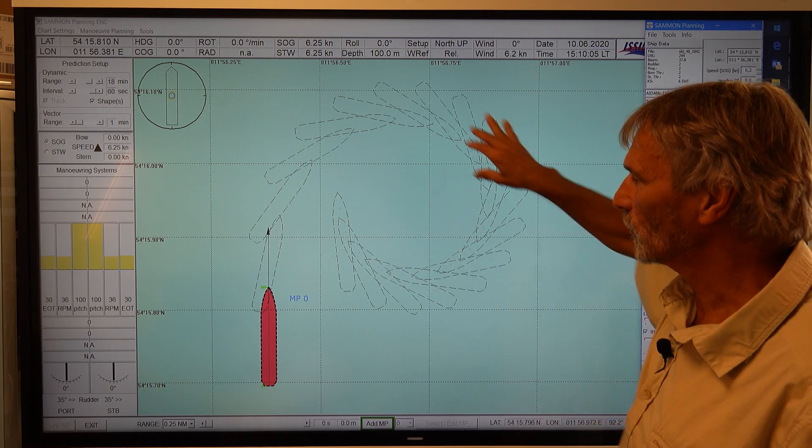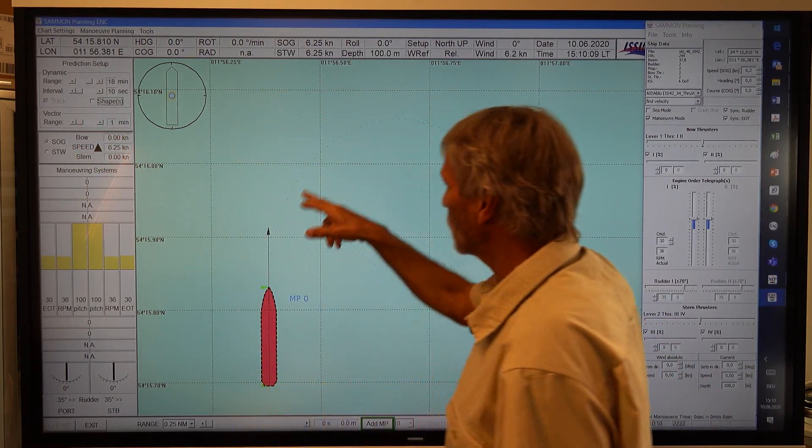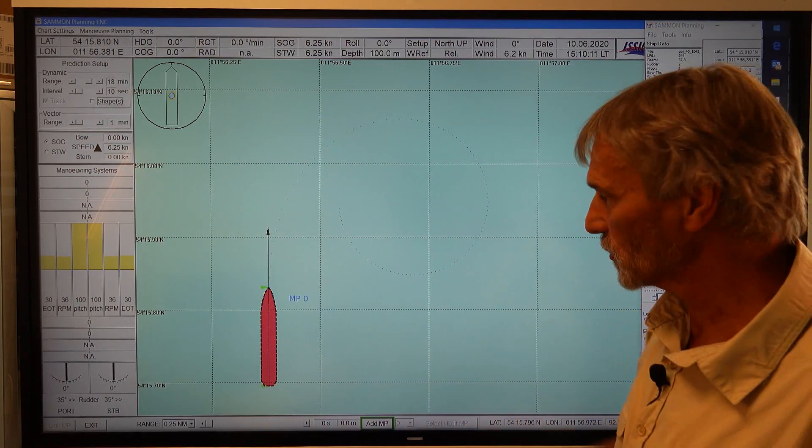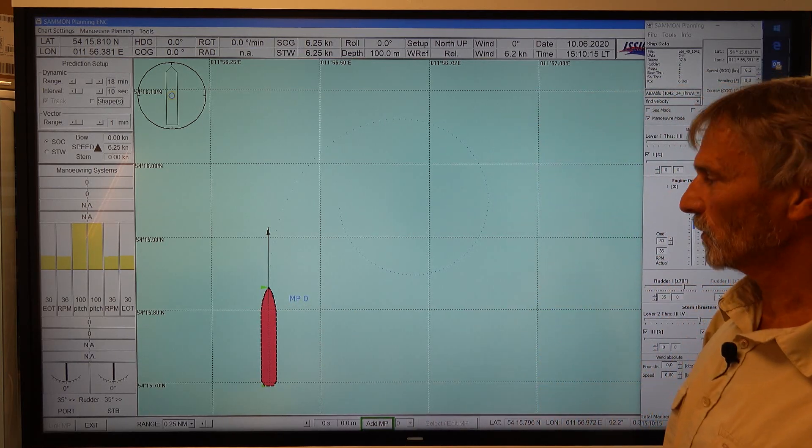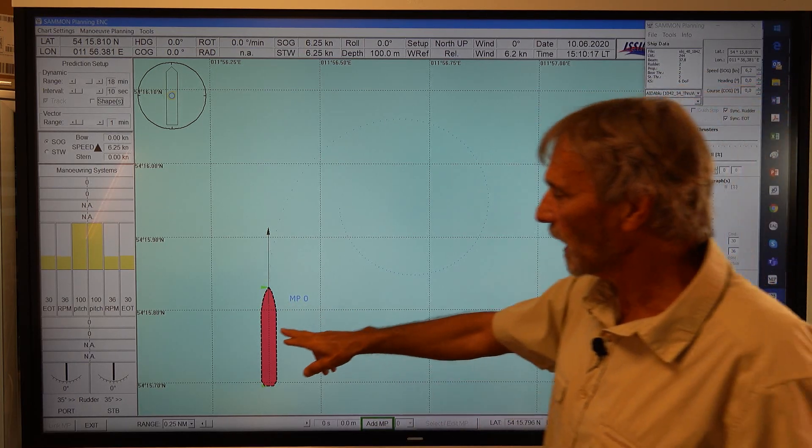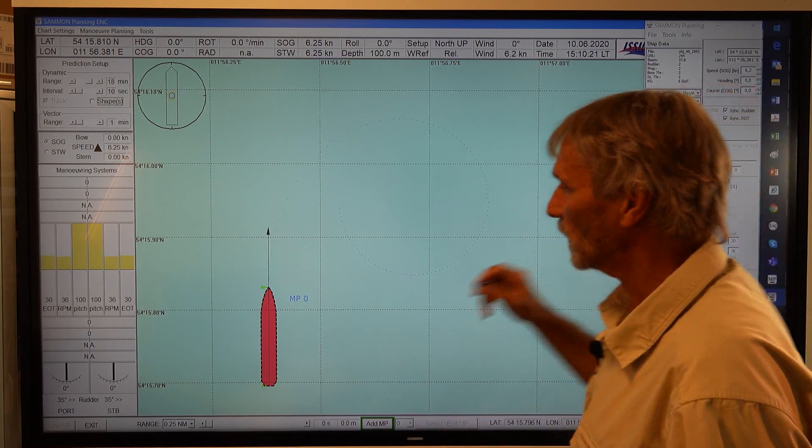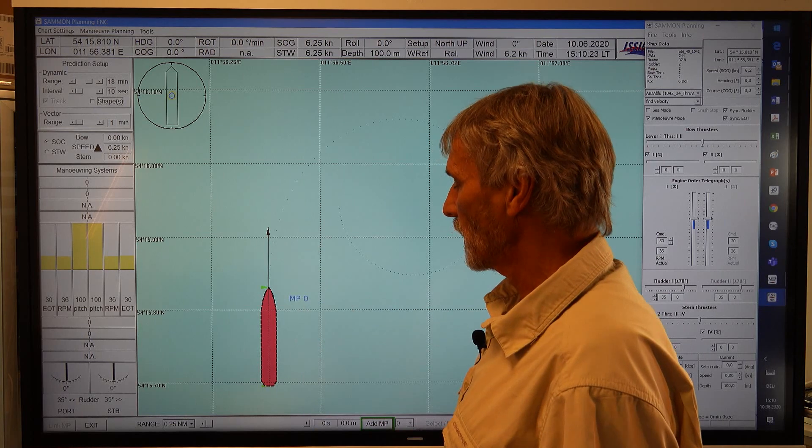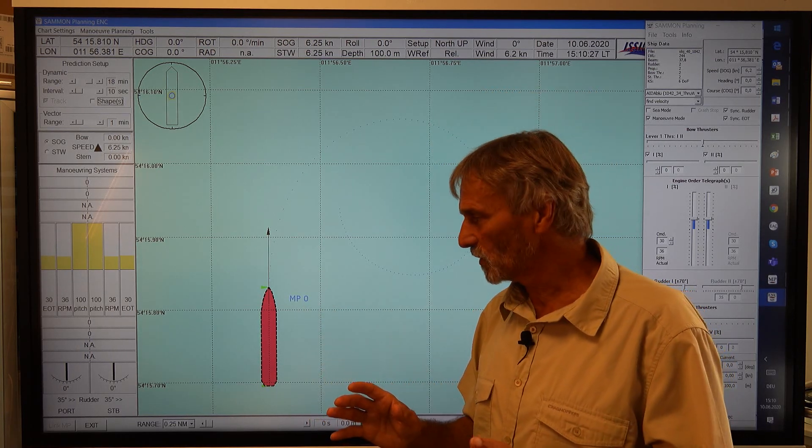For this reason I will switch off the shapes so we only see the small blue dots for the position of the common reference point of the vessel. Now we move the ship which is now proceeding with a speed of 6 knots. So this is a speed vector and now we want to demonstrate what the ship is doing.